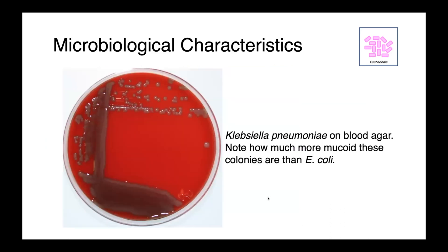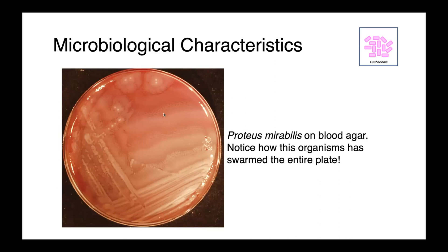Here we have a pure culture of Klebsiella pneumoniae, a closely related organism to E. coli. What you can appreciate here is just how much more mucoid these colonies are than the E. coli we saw on blood agar. Generally speaking, Klebsiella pneumoniae tend to be more mucoid than E. coli, although this isn't always the case. Here we have Proteus mirabilis — this organism swarms plates. You can see our first streak, second streak, and third streak, but waves of bacteria have swarmed to cover the entire surface over just an overnight incubation.